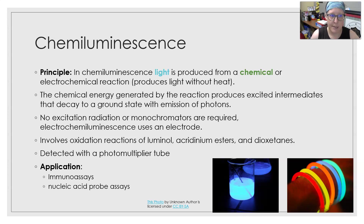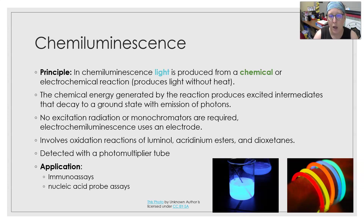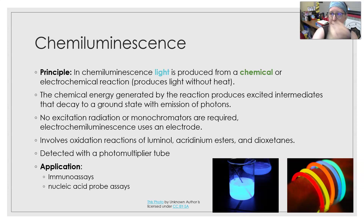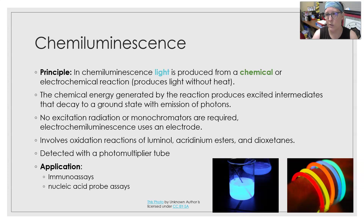Next we have chemiluminescence. The principle is that light is produced from a chemical or electrochemical reaction, which produces light without heat. The chemical energy generated by the reaction produces excited intermediates that decay to a ground state with the emission of photons, which are light particles. No excitation radiation or monochromators are required — unlike fluorometry where you have to bombard it with light first. It involves the oxidation reactions of luminol, acridinium esters, and dioxetanes, and is detected with a photomultiplier tube, the same detector used in spectrophotometry.